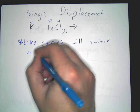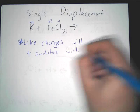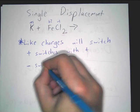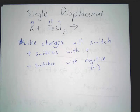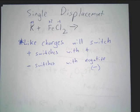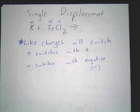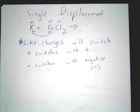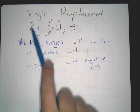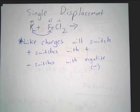Like charges will switch — positive switches with positive, negative switches with negative. It's a simple but important thing to remember. They are the ones that trade places, and you determine it based on what their charges are. Remember that in any ionic formula, the cation is always written first, so you always know the first thing is positive.